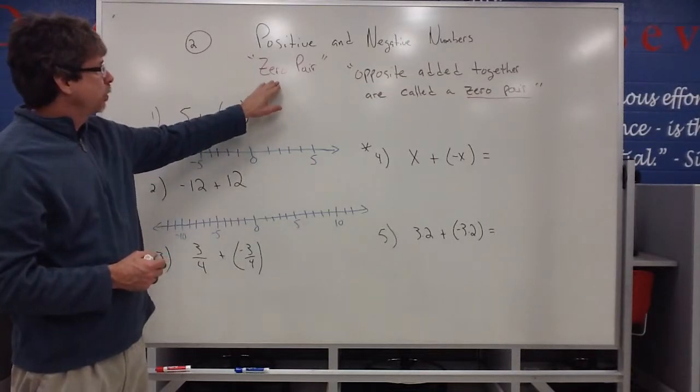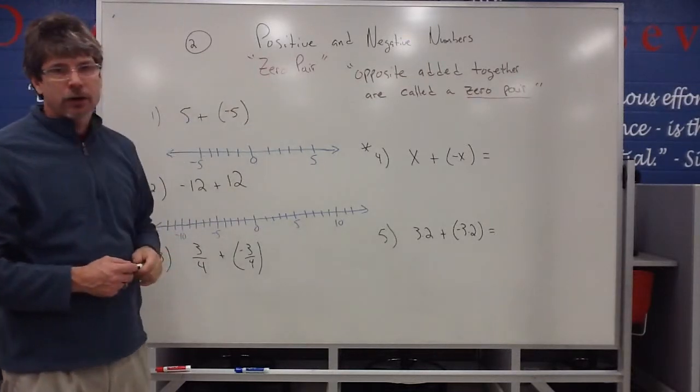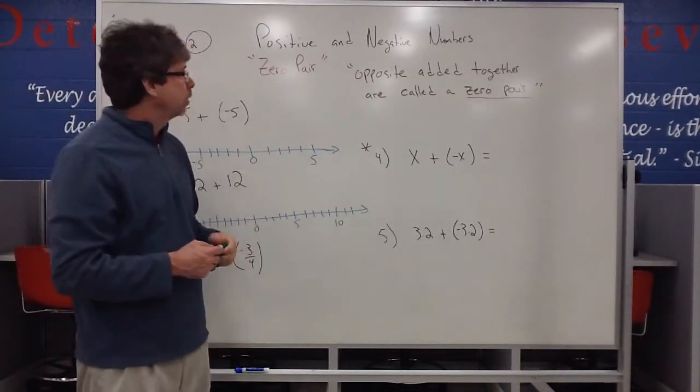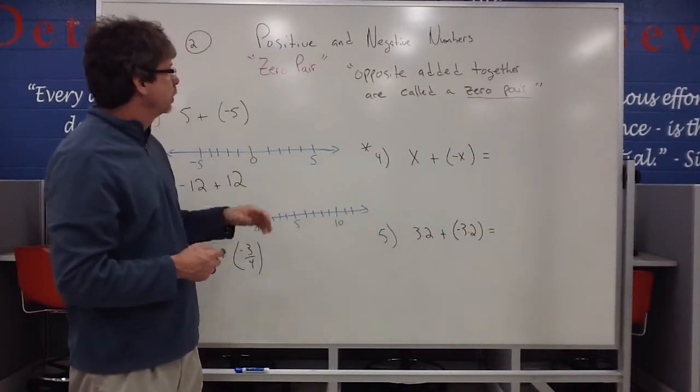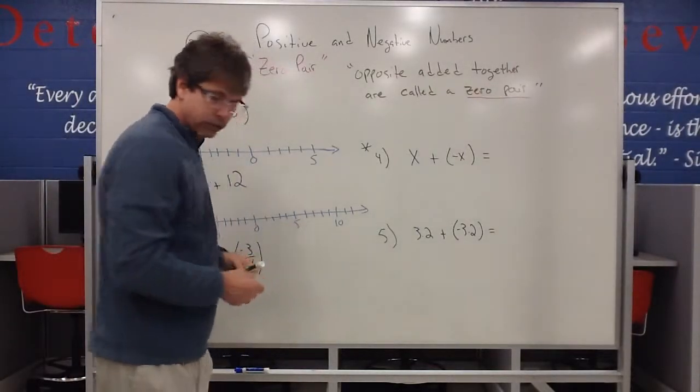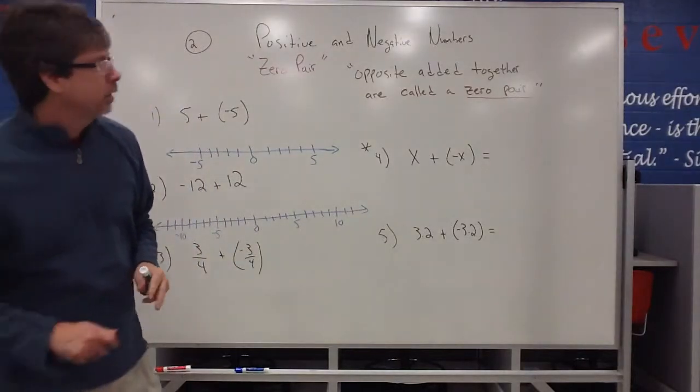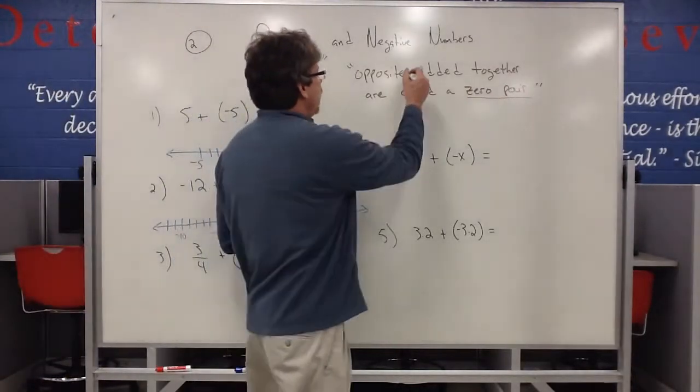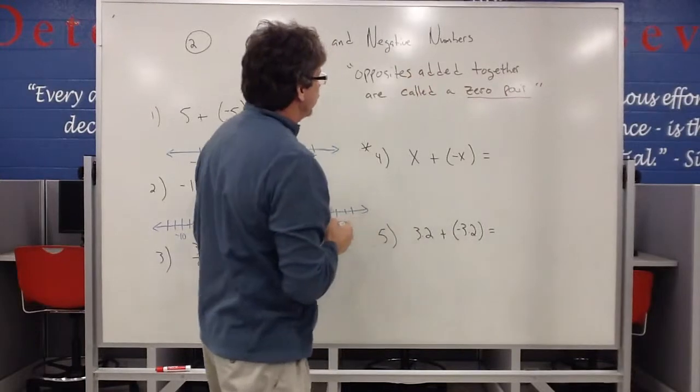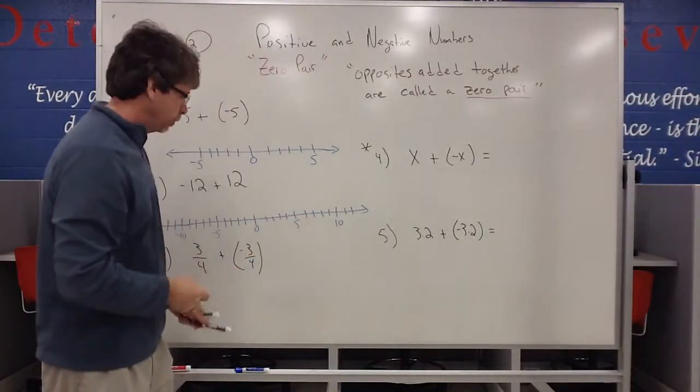I want to introduce what's called a zero pair. It's an important little piece in play with positive and negative numbers. Opposites added together are called a zero pair.